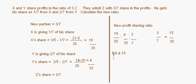This is another type of question where the shares that X and Y are sacrificing have already been given — 1/7 from X and 2/7 from Y. You just subtract them from the old share to get the new share of each partner. These are two types of questions in the calculation of the new profit sharing ratio that we have covered today.